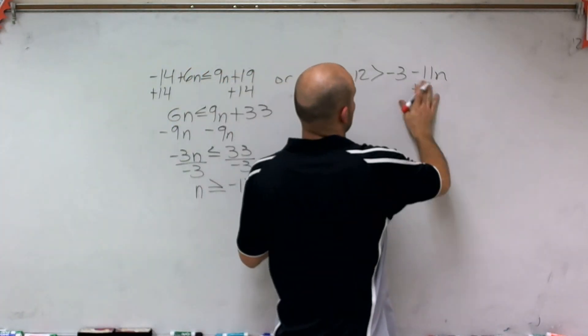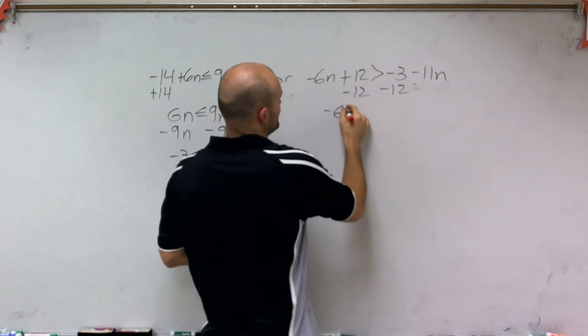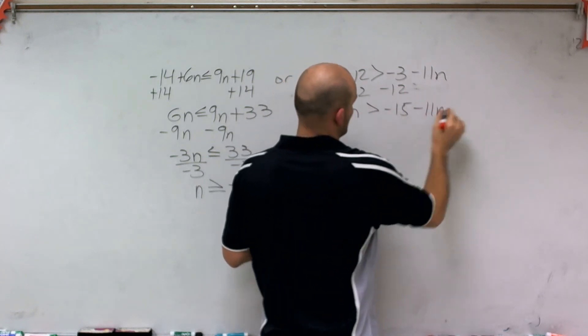So I'll add, again, first thing, let's get everything off this side. So I'll subtract 12. Therefore, I'm left with negative 6n is greater than a negative 15 minus 11n.